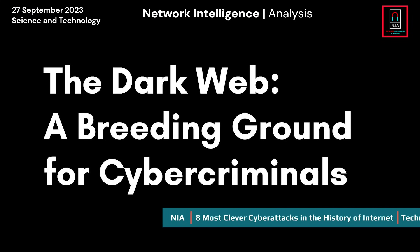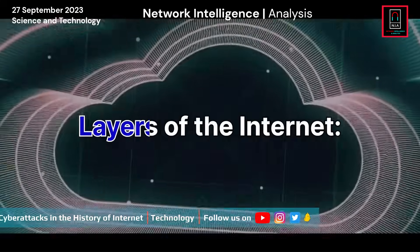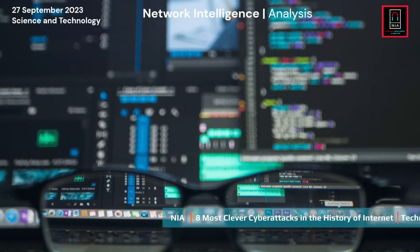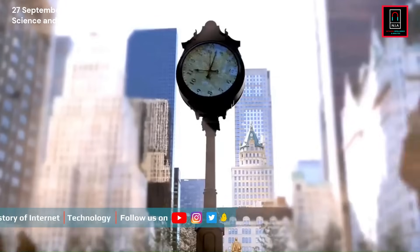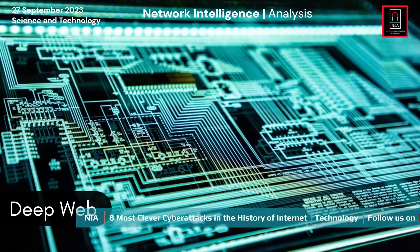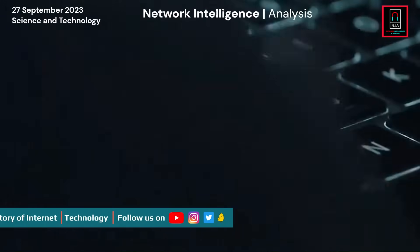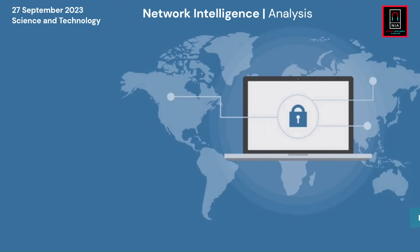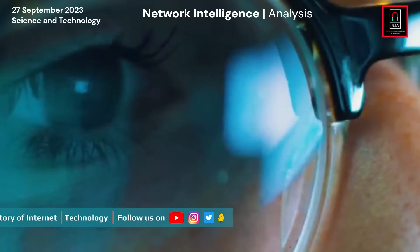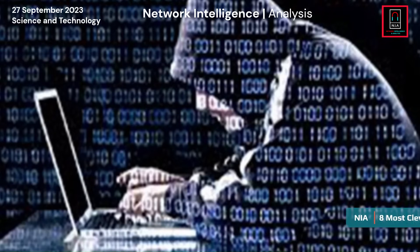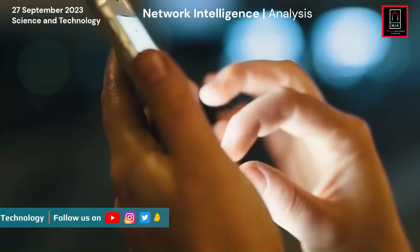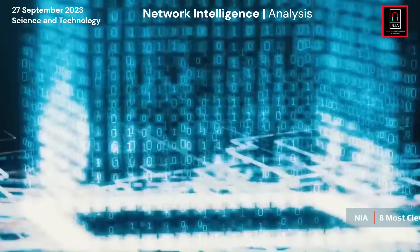The Dark Web: a breeding ground for cybercriminals. The internet has three layers: the Surface Web — indexed by search engines and where most online activity takes place; the Deep Web — web pages not indexed by search engines, including private databases, company intranets, and password-protected email; and the Dark Web — a small hidden portion of the Deep Web accessible only through specialized software like the Tor browser, intentionally designed to provide anonymity, attracting individuals with both legitimate and illicit intentions.